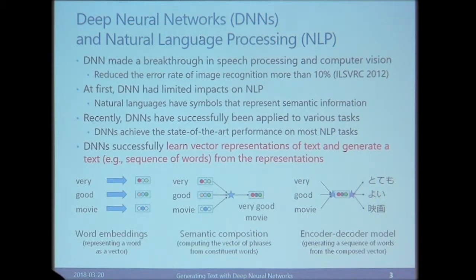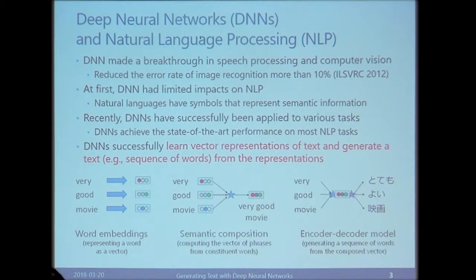Here I show three key points in deep learning for NLP. The first is word embedding, where the meaning of each word is represented as a vector. The second is semantic composition, which computes the vector of a phrase from its constituent words. The last is the encoder-decoder model, which can generate a sentence from the composed vector.